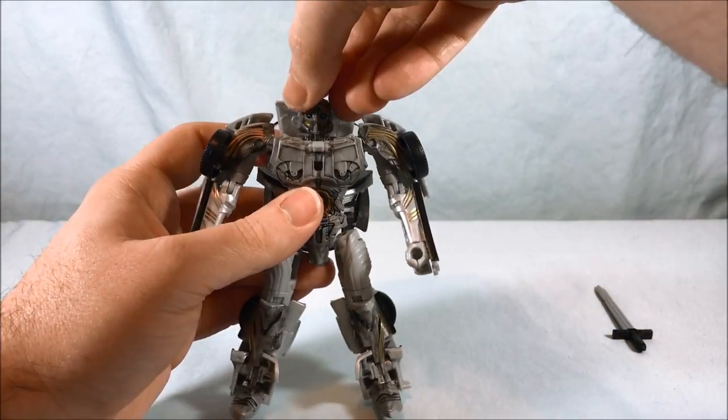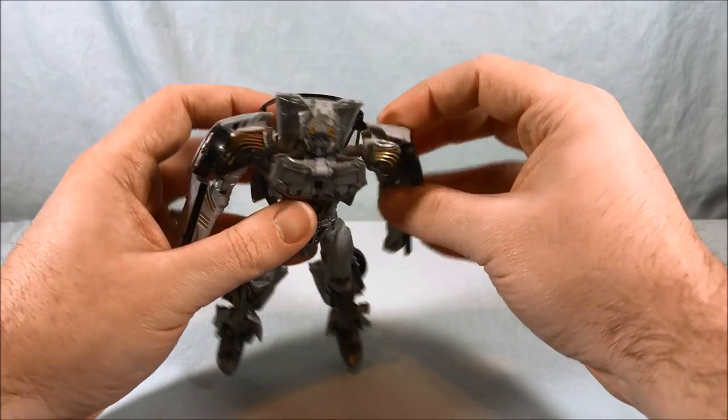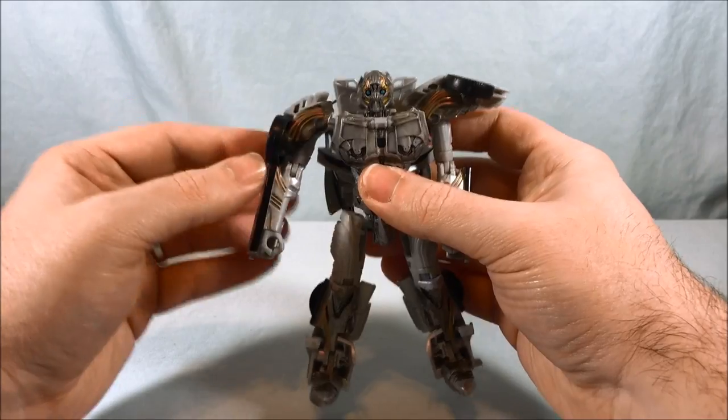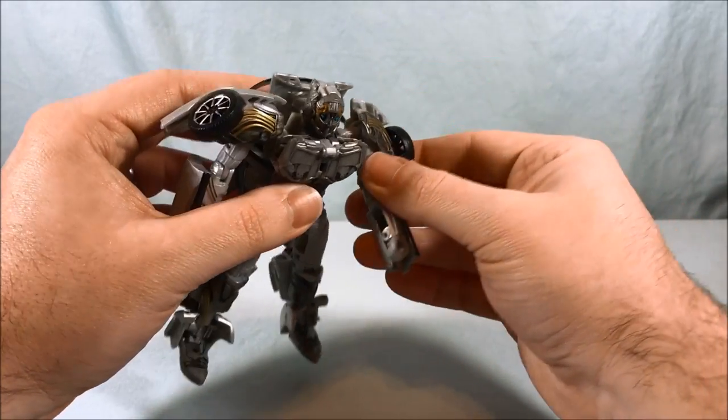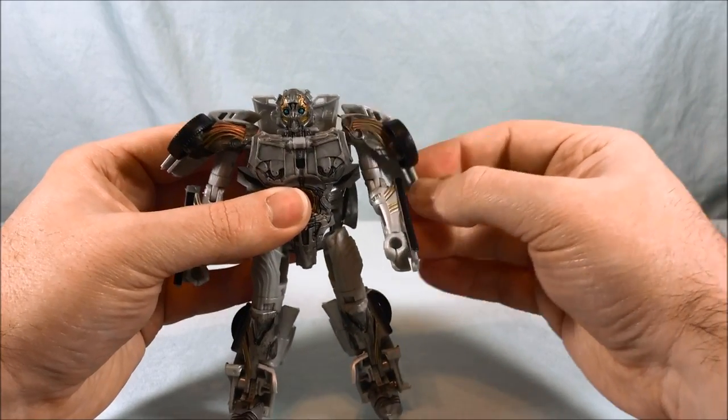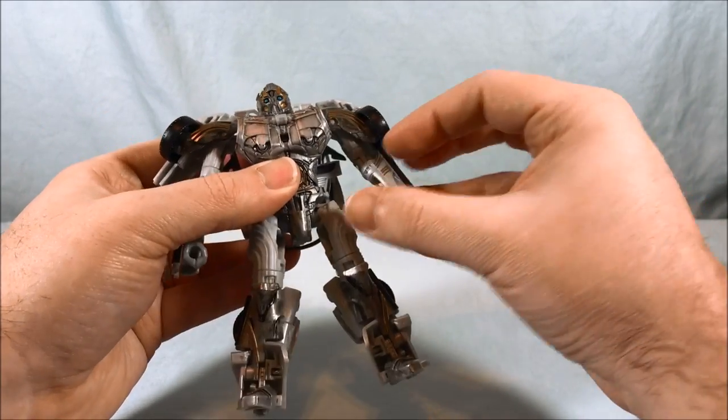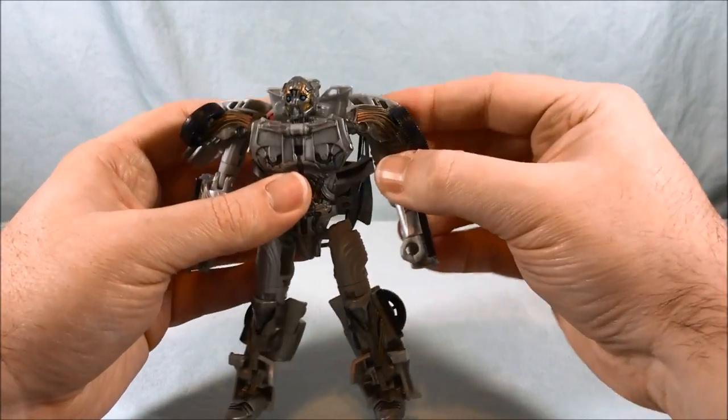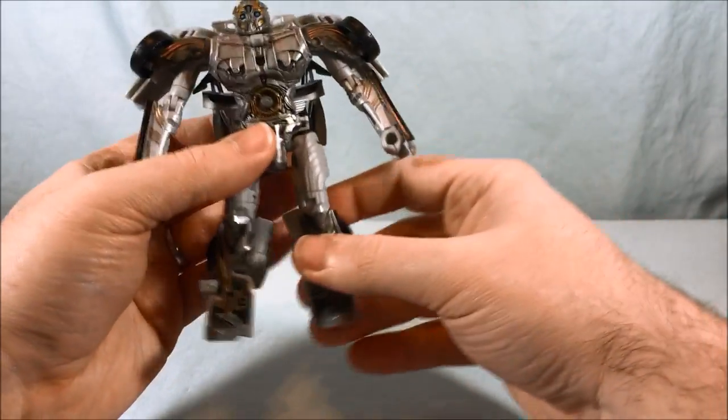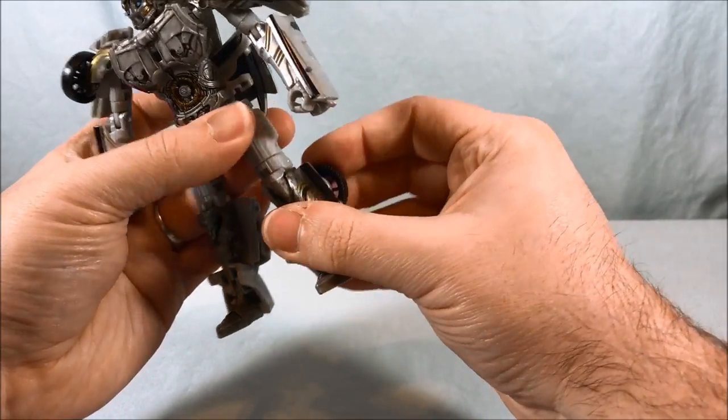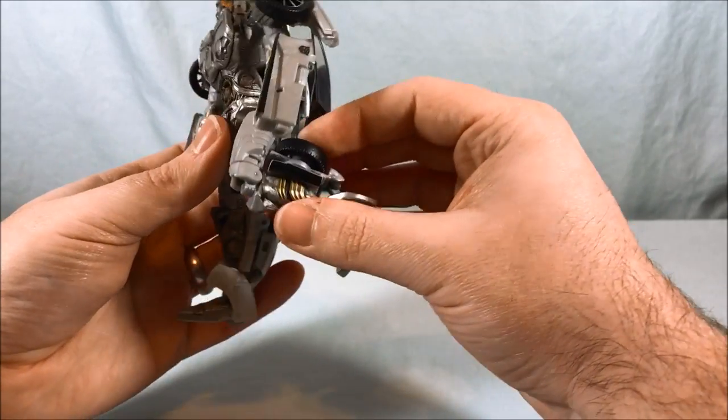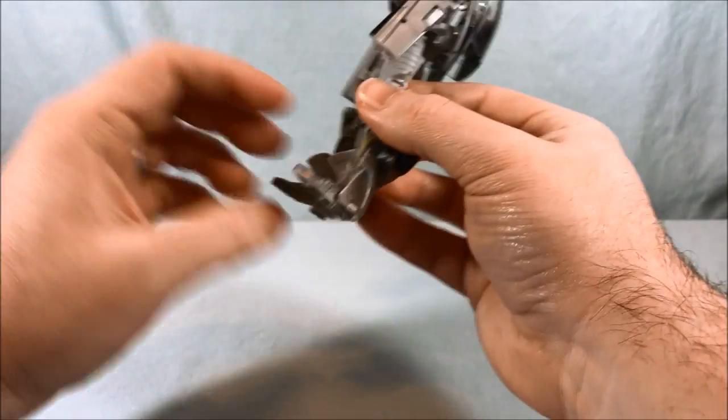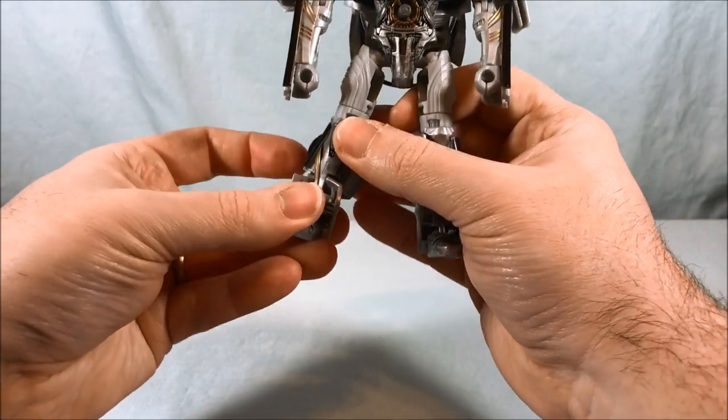For articulation, the head is on a ball joint. You have a ball joint in the shoulder, the shoulder pad you can play with. There's some swivel there, the ball joint is independent in the shoulder. This swivels on the shoulder piece as well, so there is a bicep swivel. There is 90 degrees in the elbow. The wrist does not have articulation because of the transformation. Nothing in the waist but there is a ball joint in the hip. There is a thigh swivel. There is a knee but it's very tight, but it is 90 degrees.